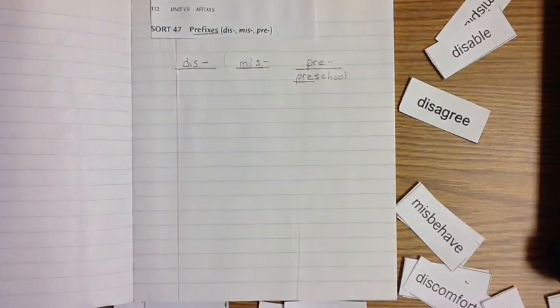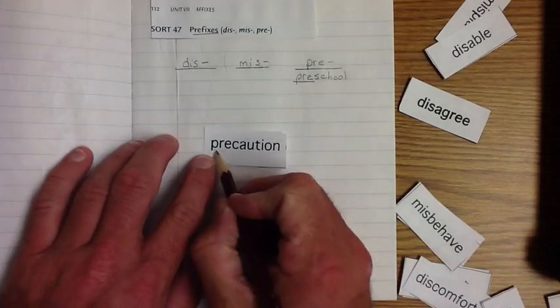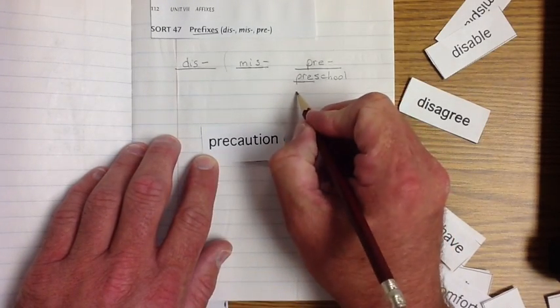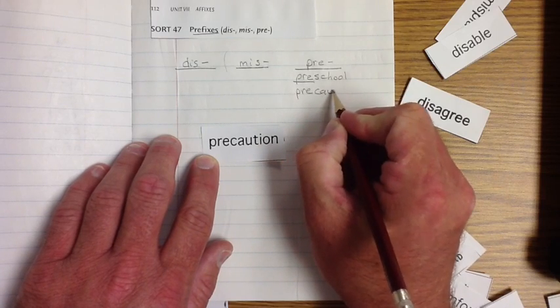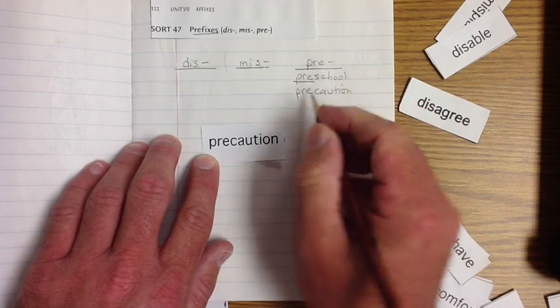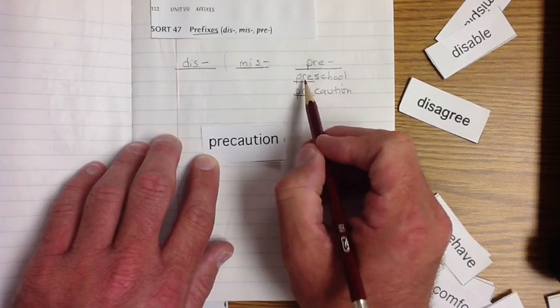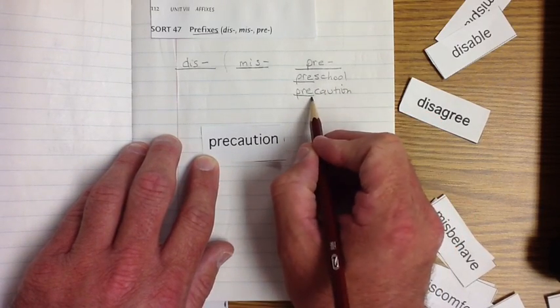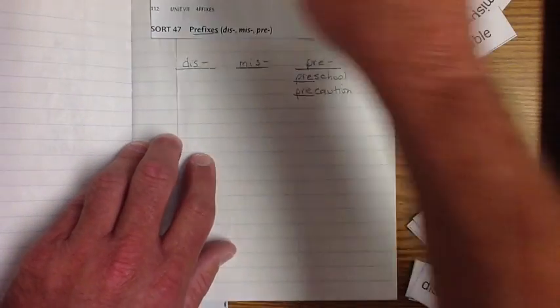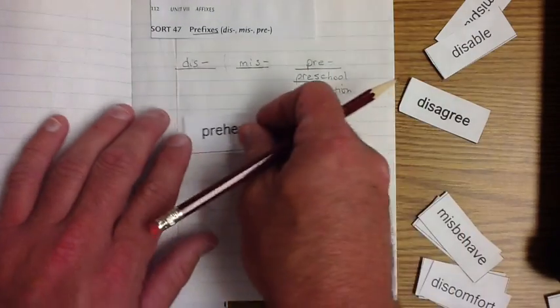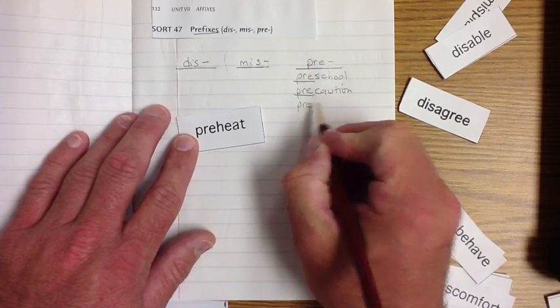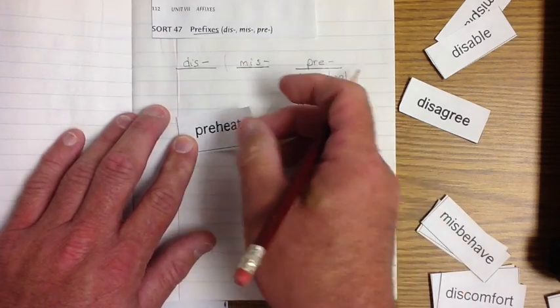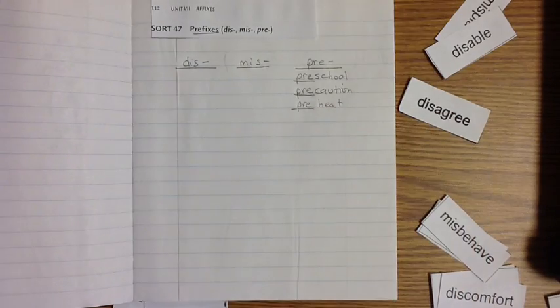Let's go to the next word, which is precaution. Precaution. I want you to underline that. What do you think a preschool is? Precaution. We're going to do one more in here and we're going to call it preheat. What do you do with things when you preheat them?